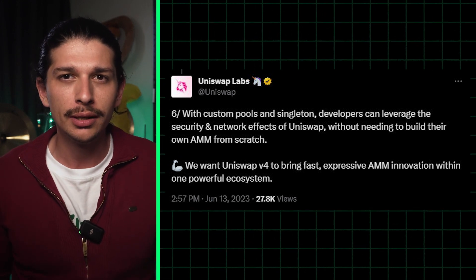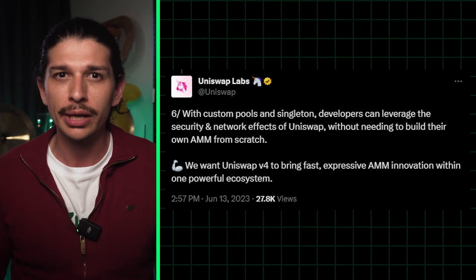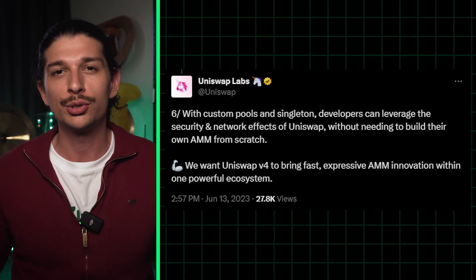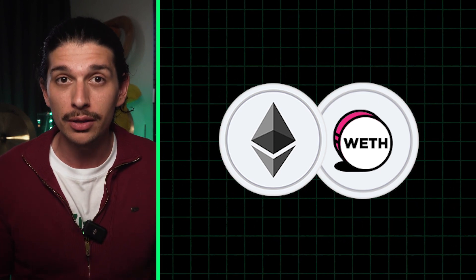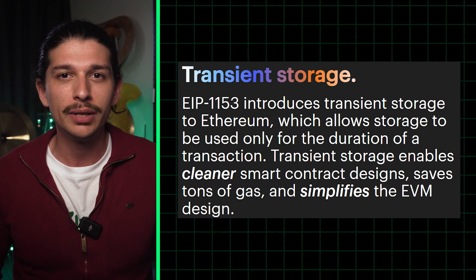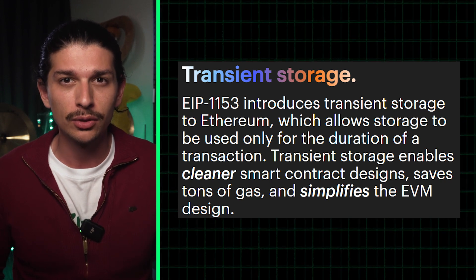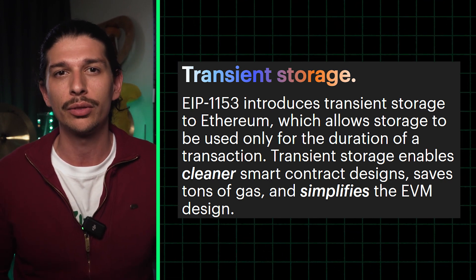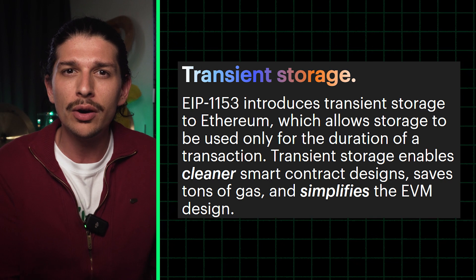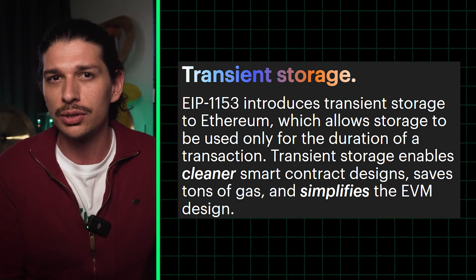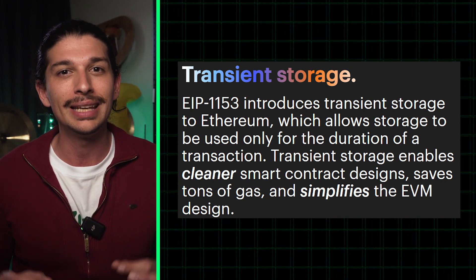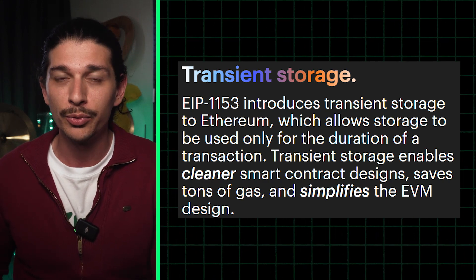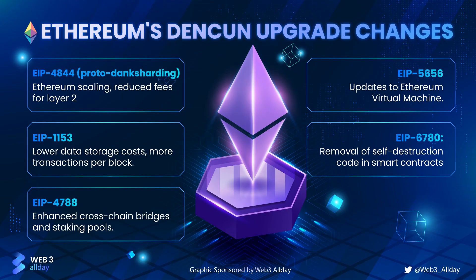This is achieved by no longer needing to transfer tokens between pools held in different contracts. V4 even supports trading with native ETH, providing further savings. Beyond this, the Uniswap team has been discussing the adoption of EIP-1153. This upgrade to Ethereum could further reduce transaction costs, although it's not been deemed significant enough to be included in the next Ethereum upgrade, which will be called Cancun Deneb.